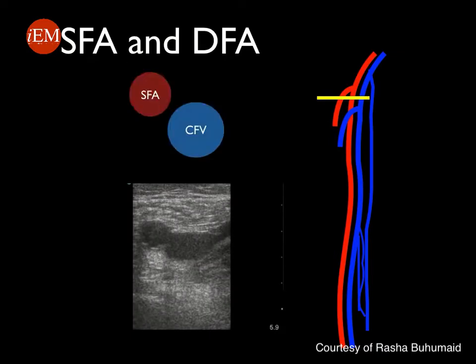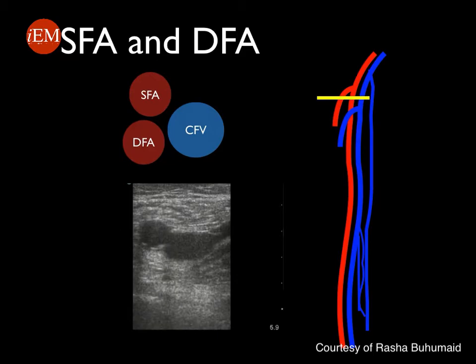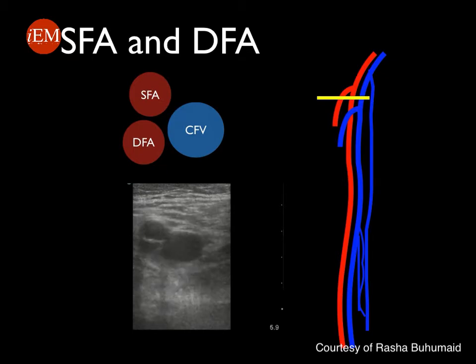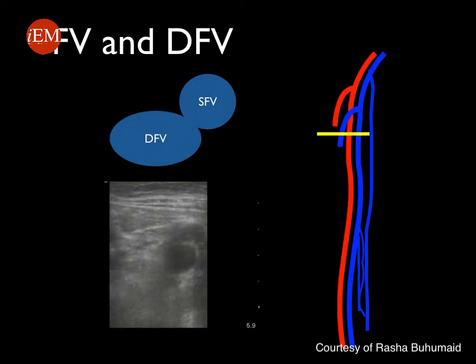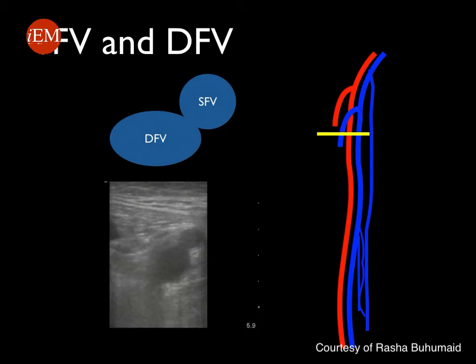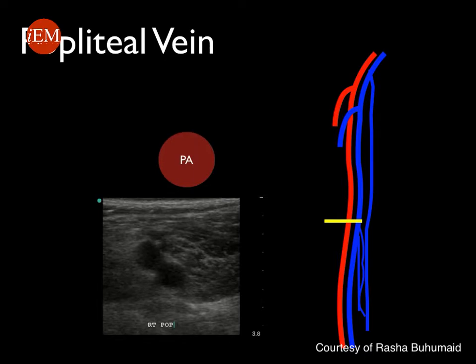Moving more distally, the common femoral vein lies medial while the common femoral artery has already divided into the superficial and deep femoral arteries. Moving even further distally, the common femoral vein itself becomes the superficial and deep femoral veins. At the level of the knee in the popliteal fossa, the popliteal vein runs on top of the popliteal artery.